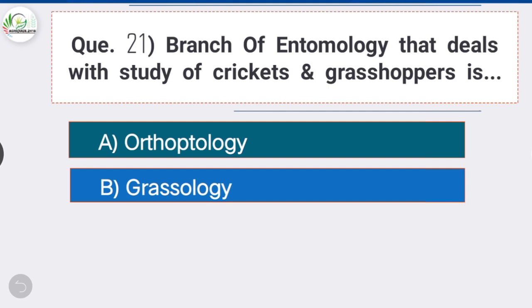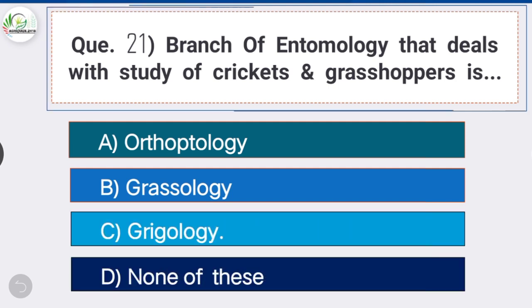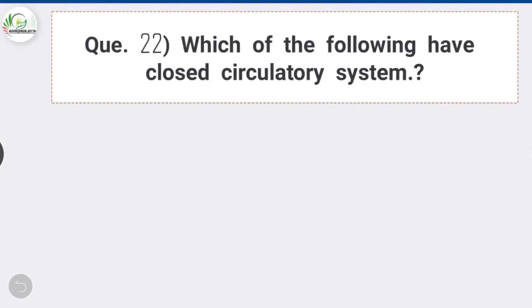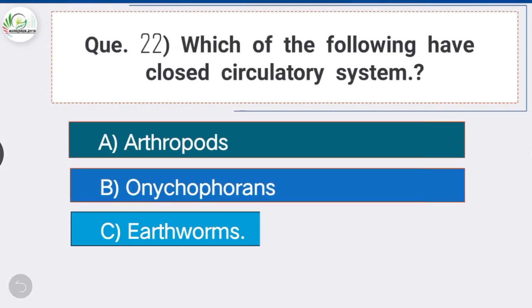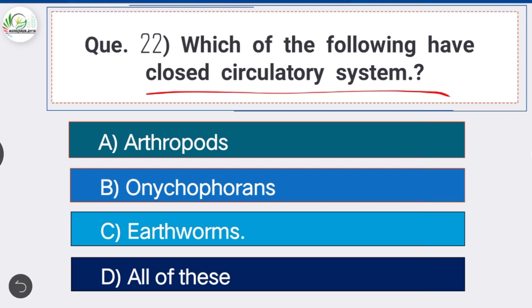Question 21: The branch of entomology that deals with the study of crickets and grasshoppers is Option C, the correct answer: gryllology. Question 22: Which of the following has a closed circulatory system?